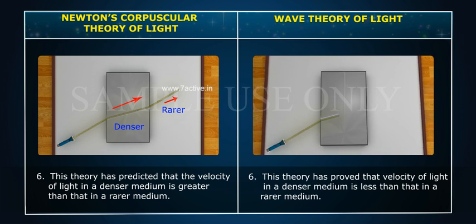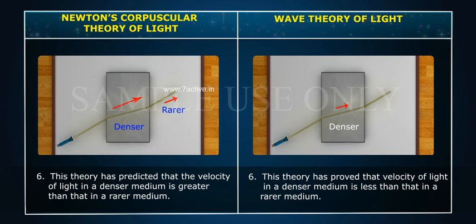This theory has proved that the velocity of light in a denser medium is less than that in a rarer medium.